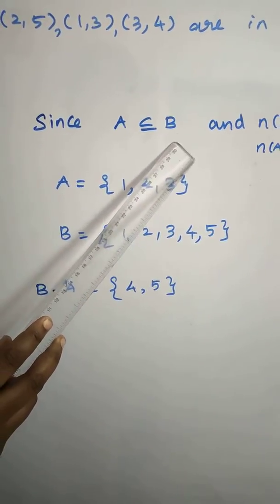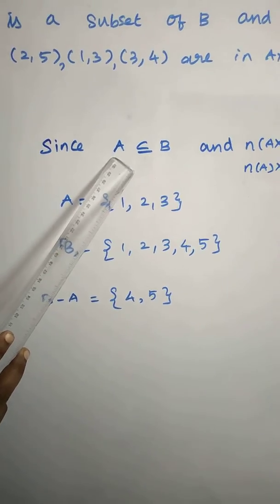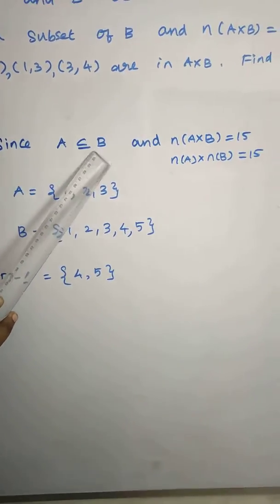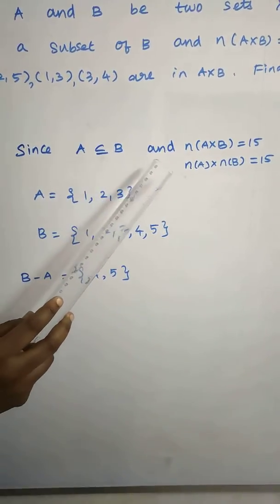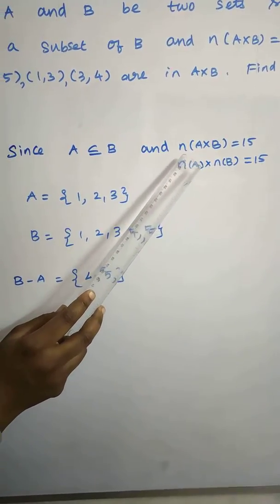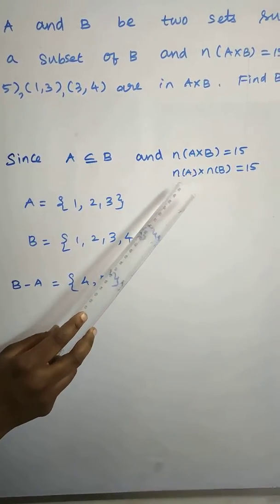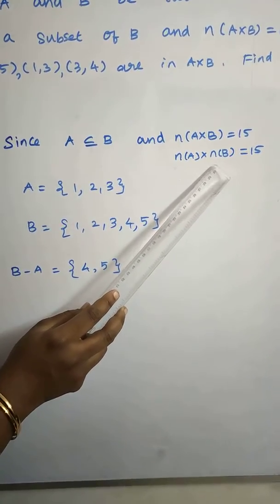Since A is a subset of B, all elements of A exist in B, but B has extra elements. n of A cross B equals 15, and n(A×B) equals n(A) into n(B).